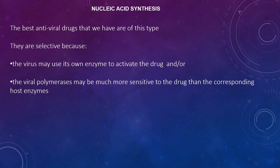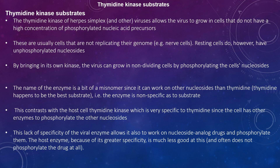The best antiviral drugs have good nucleic acid synthesis inhibition. They are selective because the virus can use its own enzyme to activate the drug, and/or the viral polymerases may be much more sensitive to the drug than the corresponding host enzymes. Viruses encode their own thymidine kinase substrates. These allow the virus to grow in cells that do not have a high concentration of phosphorylated nucleic acid precursors — cells that are not replicating their genomes, such as nerve cells. Resting cells do, however, have unphosphorylated nucleosides. The virus uses its own kinase to phosphorylate these nucleosides, allowing the virus to grow in non-dividing cells.